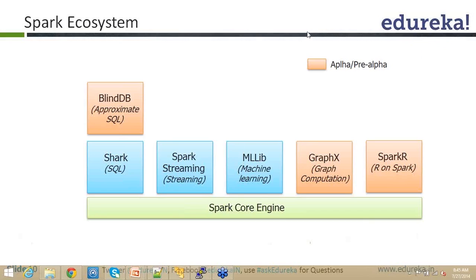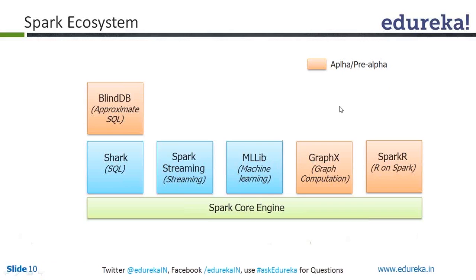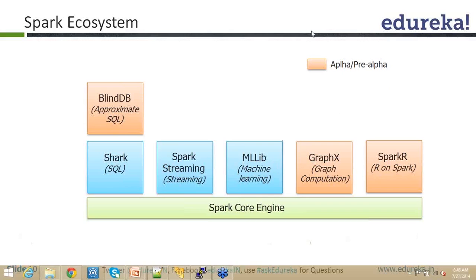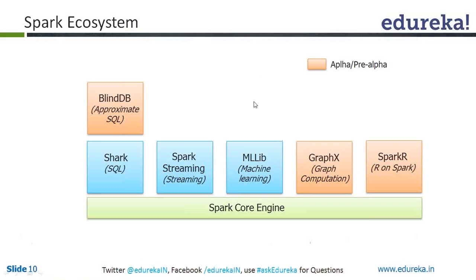You can see that some of the points here are at alpha or pre-alpha release. You can see BlindDB, GraphX, SparkR, and even MLlib — there are very few algorithms supported as of now, but the count is continuously increasing over time. There are three color-coded components: Shark, Spark Streaming, MLlib, GraphX, SparkR, and BlindDB — all built on top of the Spark Core Engine.